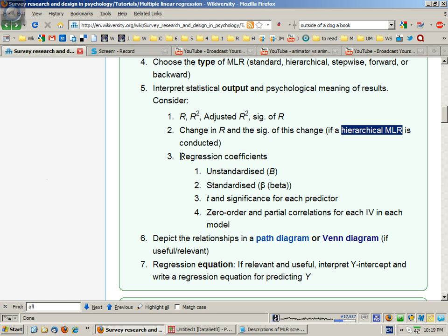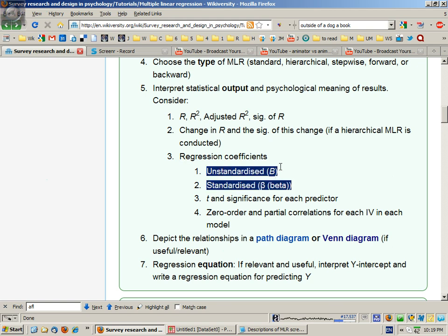Then you'll get a table called regression coefficients. For each independent variable, you'll get the unstandardized and standardized regression coefficient. Unstandardized is good for building a formula prediction equation and for comparing different models with the same independent variables. Standardized beta is good for comparing the strength of the predictors within an analysis.